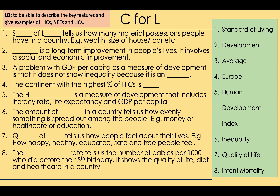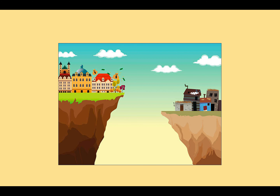Give yourselves a mark out of eight. If you didn't perform particularly well, revise these questions by watching the video again and testing yourself. Now, this picture is showing the development gap — the inequality between countries. Countries like the one on the left are very rich and have large houses, while countries on the right are much poorer. There is a big gap in quality of life and standard of living between the two.